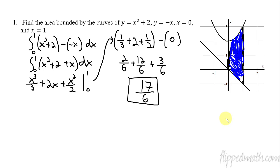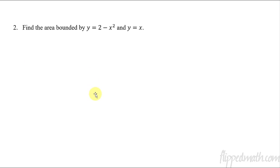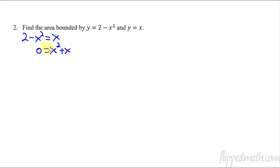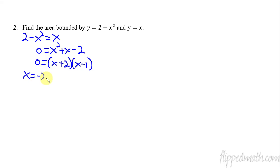Sometimes you won't be given the graph, so you have to figure this out on your own. You don't even have to graph it. If it's bounded, the two functions have to equal each other at some point — they're going to cross. So let's take two minus x squared and set it equal to x. Bringing everything to the right side, we get x squared plus x minus two, which factors as x plus 2 times x minus 1. That means these two graphs cross at x equals negative 2 and x equals 1.